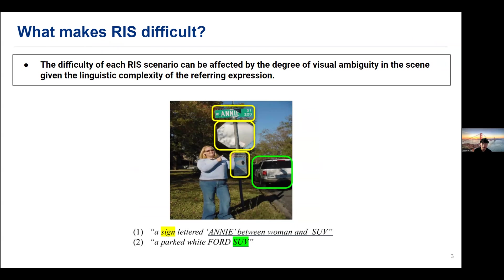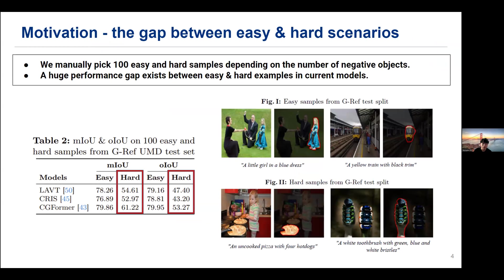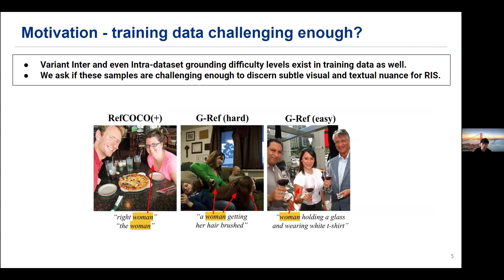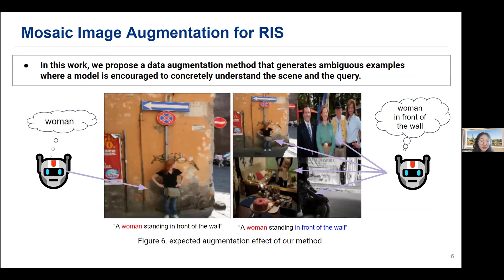The more negative objects you have, the more difficult the RIS problem becomes, and the model needs to fully understand the words to discern similar objects. We evaluated whether current models actually perform well in hard cases by manually picking examples considering the number of negative objects. Surprisingly, we found a huge performance gap between easy and hard scenarios. Inspecting training samples, we found many easy samples even within datasets thought to be harder. We assume these samples may not be challenging enough to train models for capabilities that RIS needs. So we wondered if there is a way to increase visual ambiguity to create challenging samples — this is where we proposed Negative Image Mosaic Augmentation.